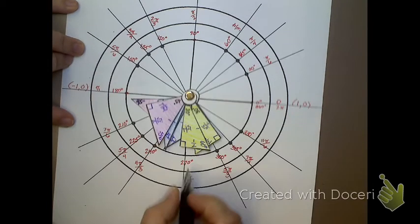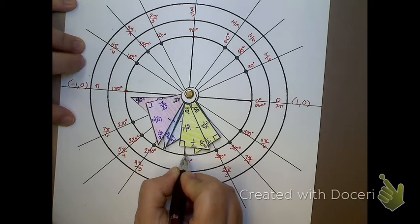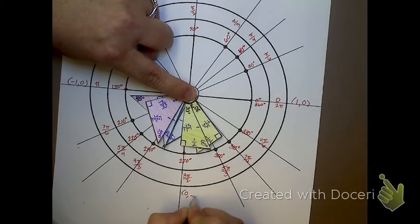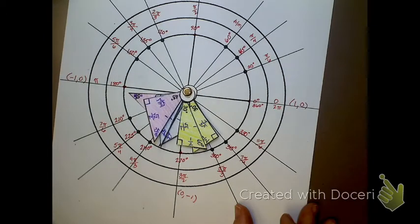And then down here, at 270 degrees, it's over zero and down one. So this is the point zero, negative one. So those are the easy ones to come up with.